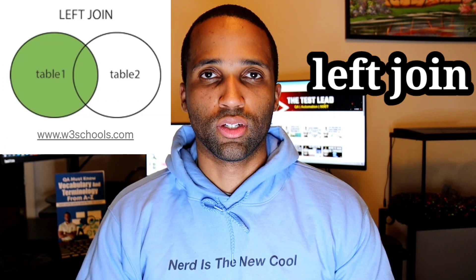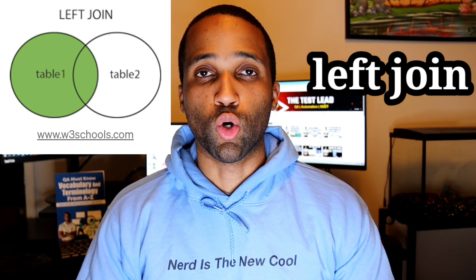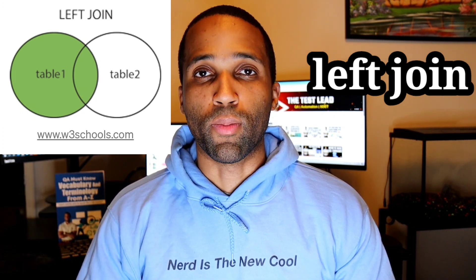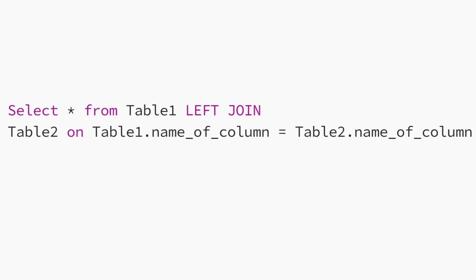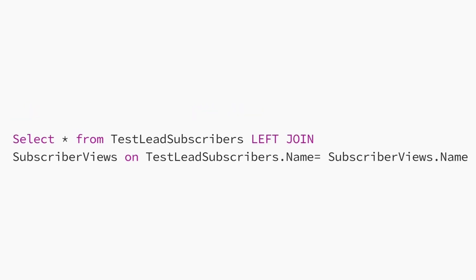Next, the SQL left join. The SQL left join allows us to return all the data from our first table along with the matching results from our second table. The command looks like this: select star from table one left join table two on table one dot name of column equals table two dot name of column. Here's a real example: select star from test lead subscribers left join subscriber views on test lead subscribers dot name equals subscriber views dot name. This command will retrieve all the data records from the left table, test lead subscribers, and the matching records from the right table, subscriber views.